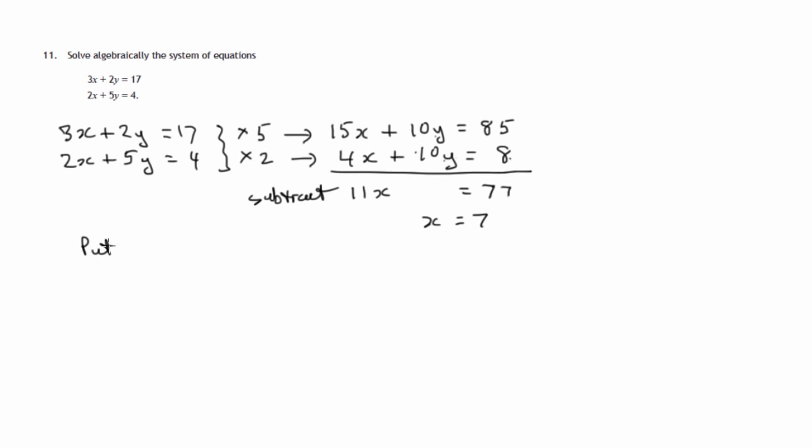We now put the value we've found, x equals 7, into one of these. Let's just take the first one. 3x plus 2y equals 17. So we get 3 lots of 7 plus 2y is 17. So that's 21 plus 2y is equal to 17. Take 21 from both sides. 17 minus 21 is minus 4. And divide both sides by 2. y equals negative 2. So these are the two values.